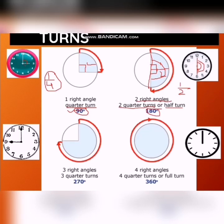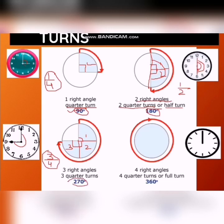Now, three quarter turns. We have the first quarter turn, the second quarter turn, and the third quarter turn. These three quarter turns make a 3/4 turn. At 45 minutes, when the minute hand moves from 12 to 9, it makes a three-quarter turn — written as 3/4. It makes an angle of 270 degrees and equals three right angles.